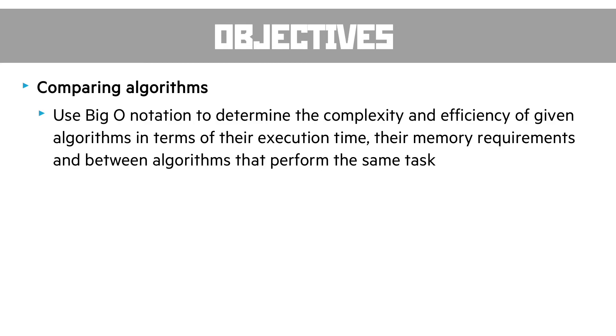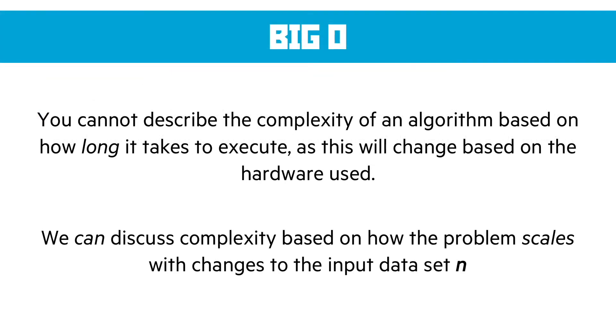The final objective in this playlist is to compare the algorithms. Until this point, when we've compared algorithms, we've used plain English to describe the differences between them. We can learn about a thing called big O notation. And this helps us determine the complexity and efficiency of given algorithms in terms of their execution time, their memory requirements, and between algorithms that perform the same task. And it's a very simple way of discussing how long an algorithm would take, how much memory requirements it needs, and things like that. Why do we need big O? Because you cannot describe the complexity of an algorithm based on how long it takes to execute. Because this will change based on the hardware used, and possibly the data set given.